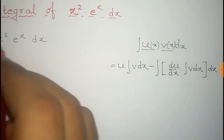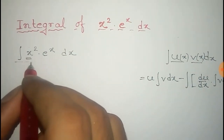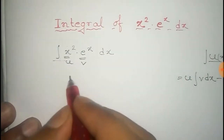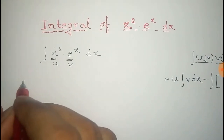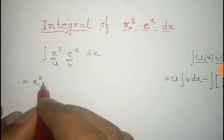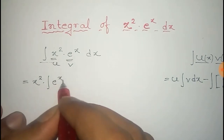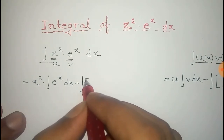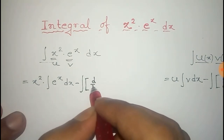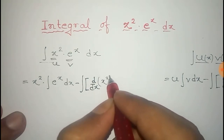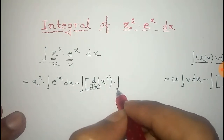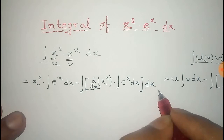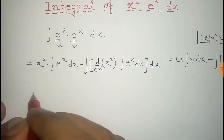Applying this formula, we take x squared as u and e to the power x as v. So it becomes: x squared into the integral of e to the power x dx, minus the total integral of the derivative of x squared into the integral of e to the power x dx.